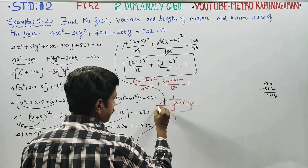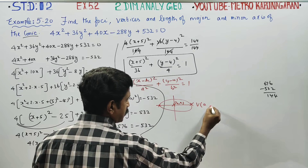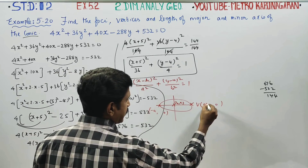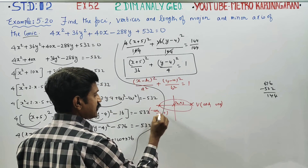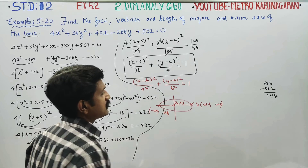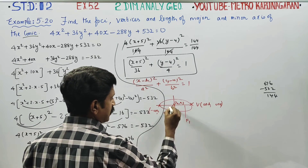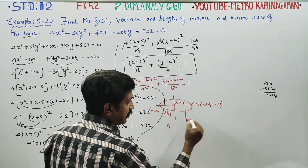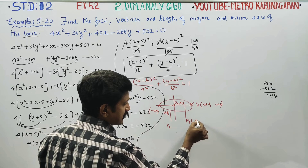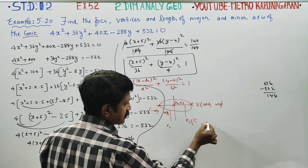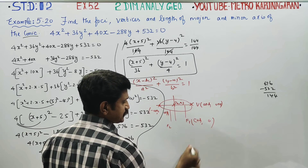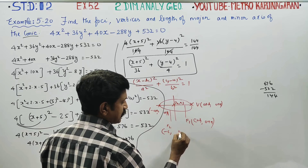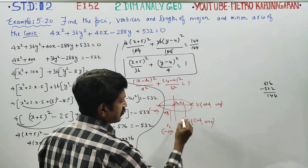For a horizontal ellipse centered at (h, k), the vertices are at (h ± a, k), and the foci are at (h ± c, k). Here, c is calculated from a² and b² using the ellipse formula. f1 = (c + h, k) and f2 = (−c + h, k). These are our focus formulas.